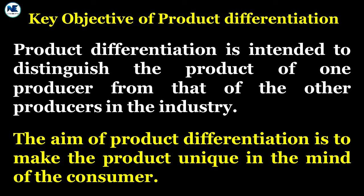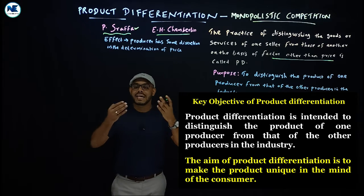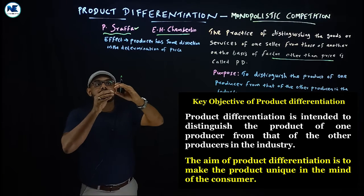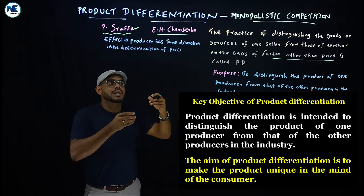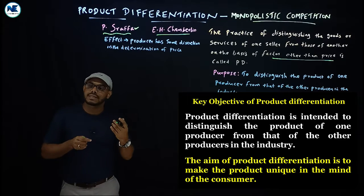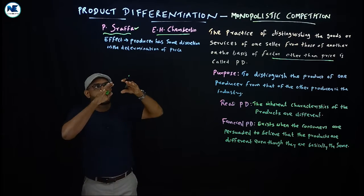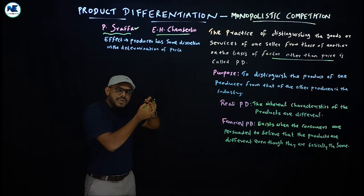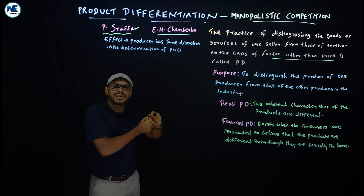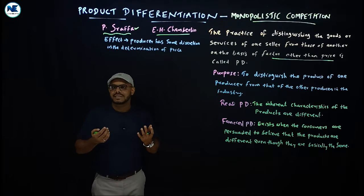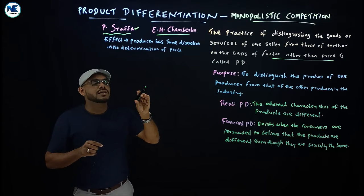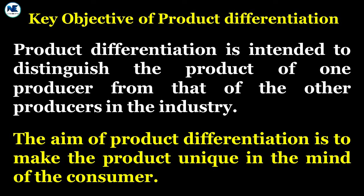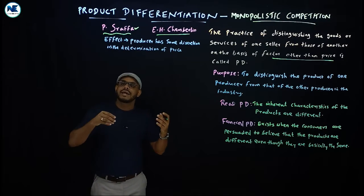For example, Pepsi and Coca-Cola — each claims their product is unique and of better or superior quality compared to the other. Though there are many similarities in taste and content, through advertisement and promotional activities each firm claims its product is unique and superior. Advertisement is the best example of selling activities. Selling cost is essential in monopolistic competition to popularize products and ensure sales promotion.